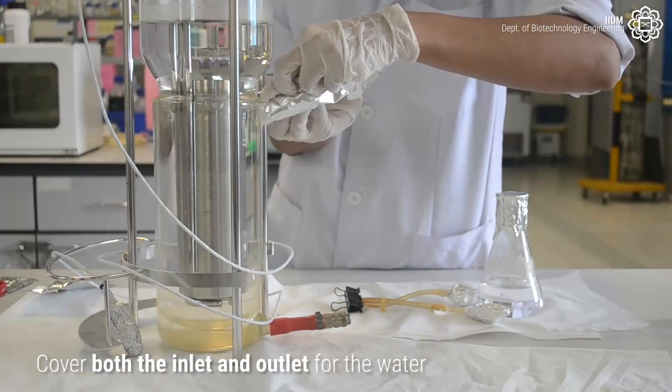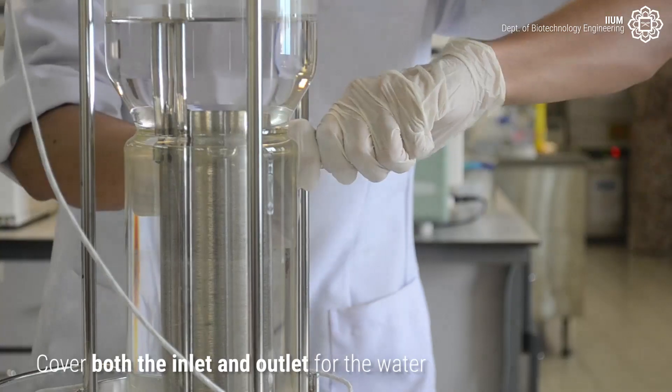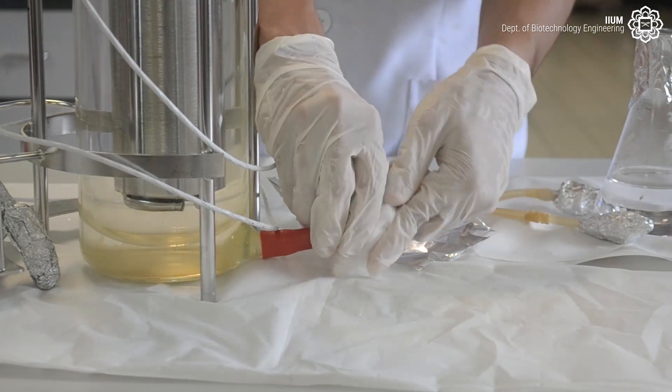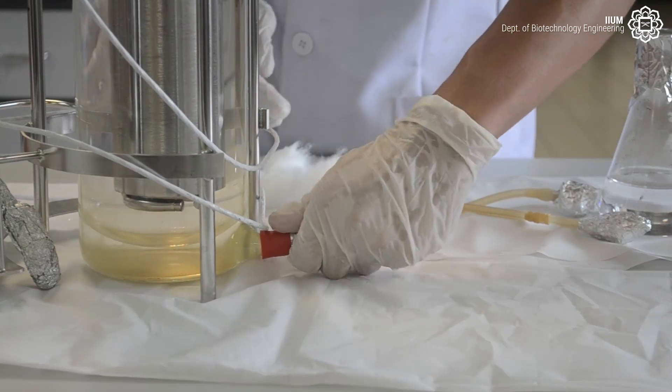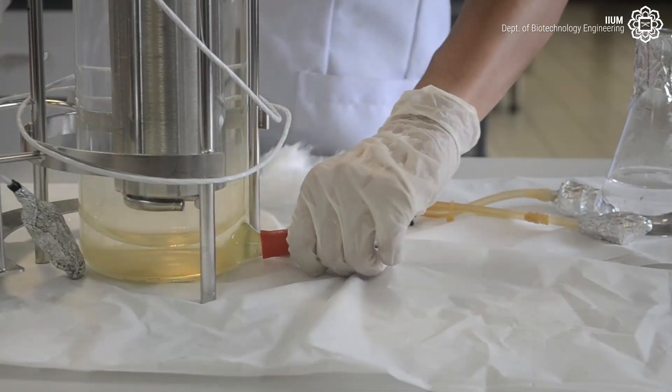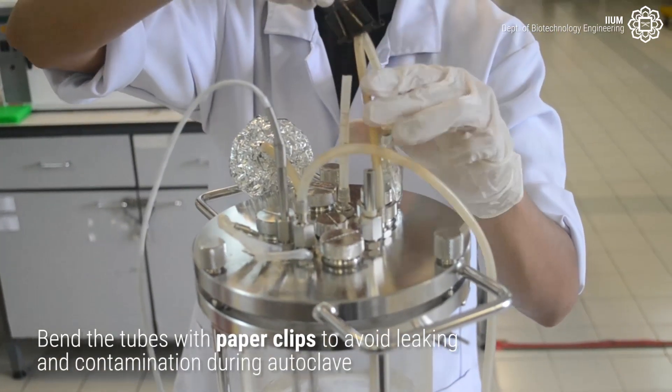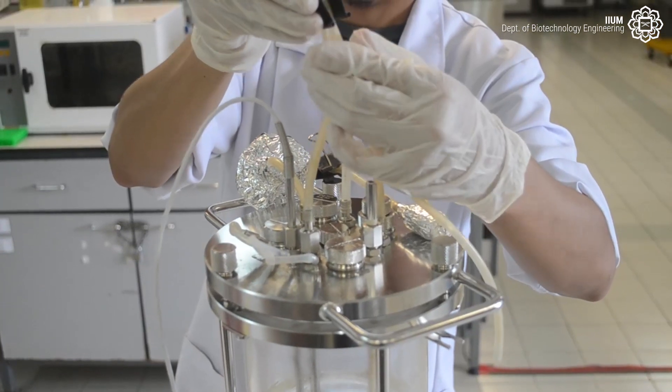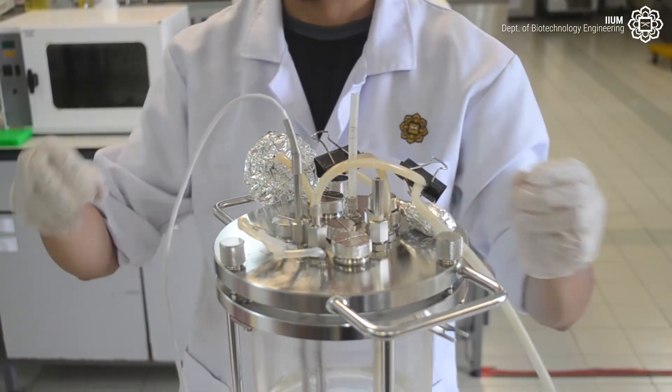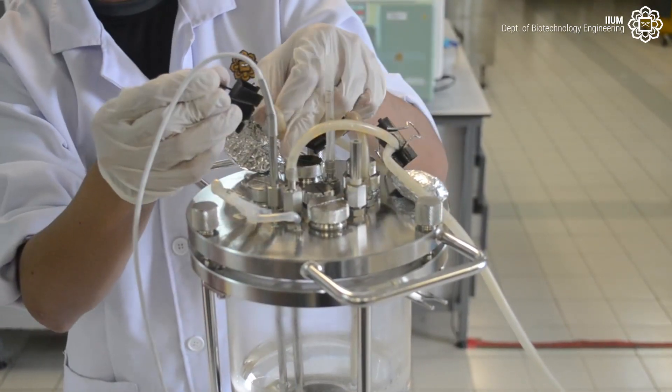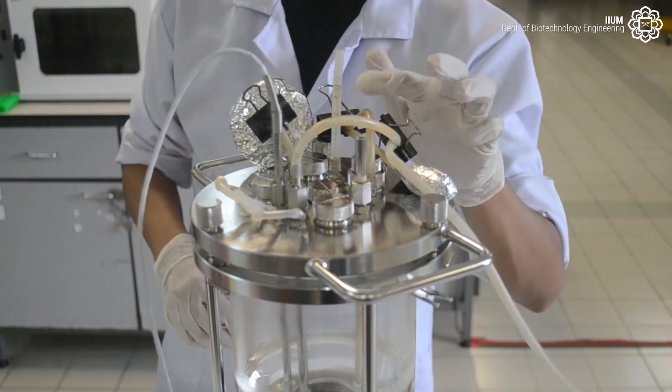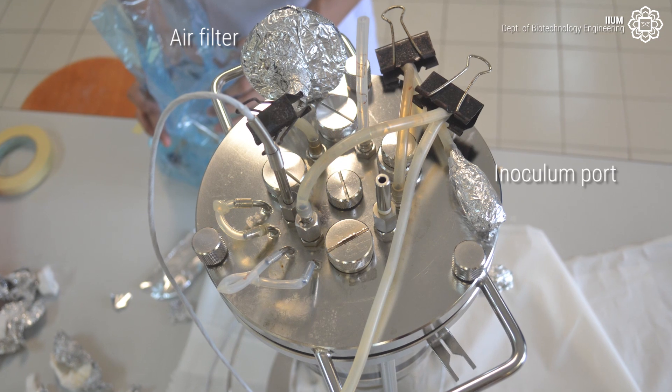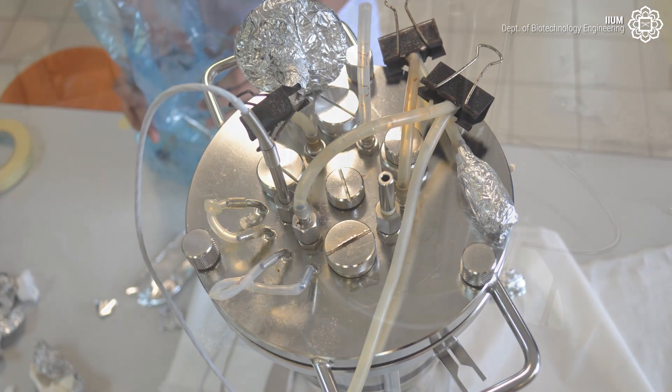Next, cover both the inlet and outlet of the water. After that, bend the tubes with paper clips to avoid leaking and contamination during autoclave.